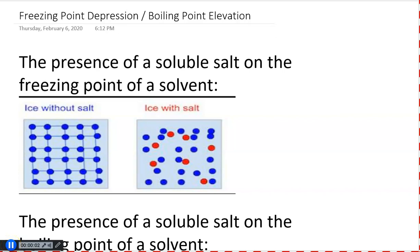Hello everyone. In this final half of the final section of chapter 12, we're going to talk about how the presence of solute particles within a solution will actually modify the properties of a solvent. We're going to focus primarily on two solvent properties: freezing point and boiling point, and how those two properties change if I introduce a solute into a solvent. Let's briefly discuss why the properties change, and then we'll go through a mathematical example.